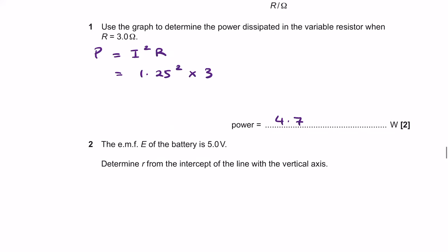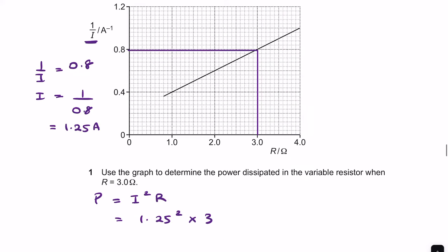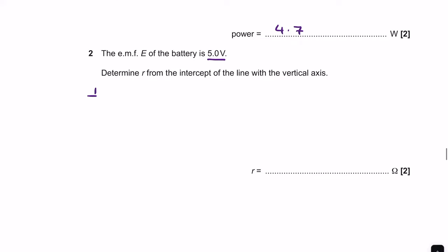For part II, with EMF of 5 volts, determine r from the Y-intercept. Extrapolating the line, 1/I equals 0.2 at the Y-intercept, so I equals 5 amps. Using r equals V over I: r equals 5 divided by 5 equals 1 ohm.